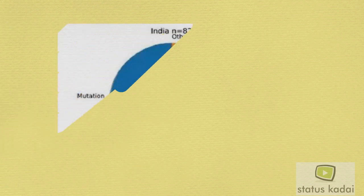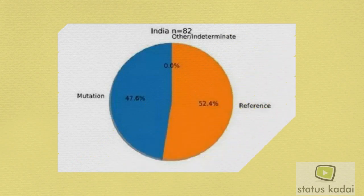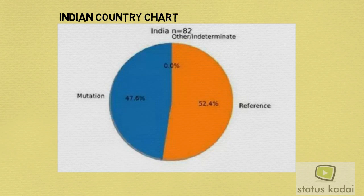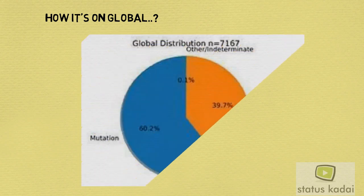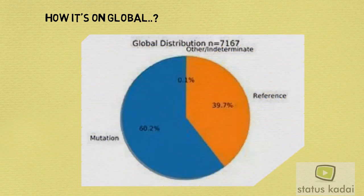Let's see the chart for Indian country mutation. In that, we can understand how the coronavirus handles mutation clearly. Then, let's see how it looks globally. In the global chart, more than 50% of tests are positive for mutation, and research is still ongoing.